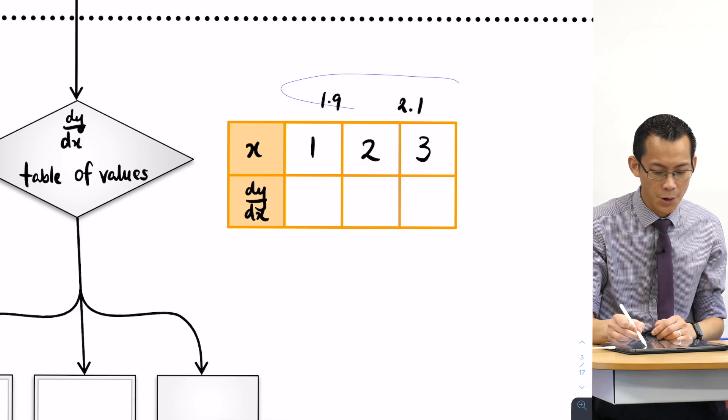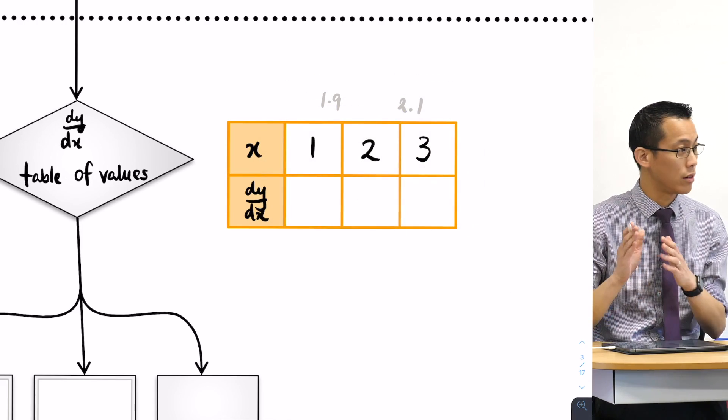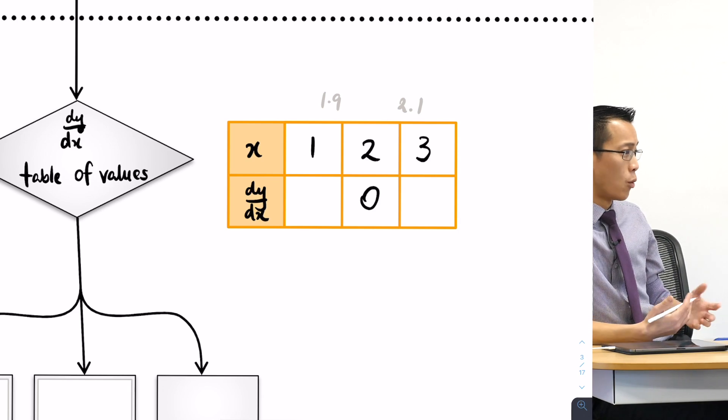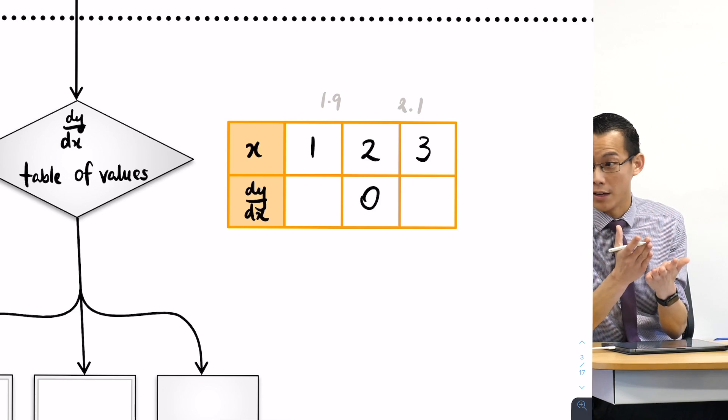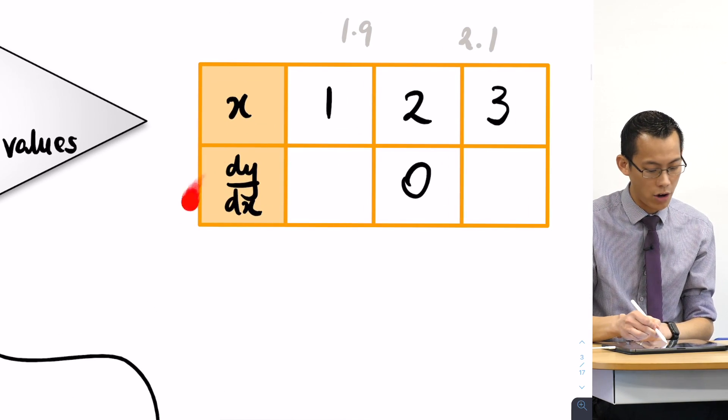So I'll give you a second now. You've got this table of values and what we're going to do is put 1, 2, and 3. In fact, we don't need to do 2, we already have a value for that. We want to put 1 and 3 into the derivative, not the original function. We're actually evaluating what's dy/dx.